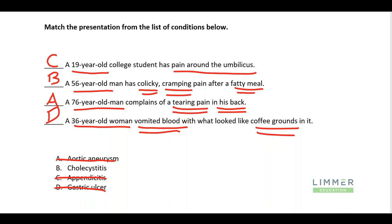So that leaves cholecystitis for the 56-year-old with colicky, cramping pain after a fatty meal — classic gallbladder. What have we learned? The description of the pain matters: pain around the belly button, colicky cramping after a fatty meal, tearing pain — think about the events and the assessment needed to identify these. These complaints, signs, and symptoms all point in a direction. The National Registry doesn't hammer you over the head with it, and this helps us pick out things that are very important in questions.